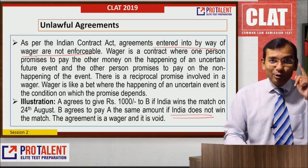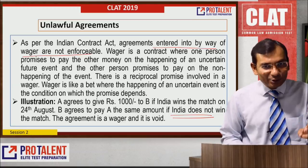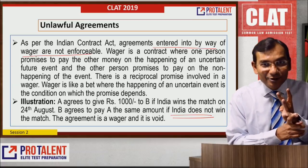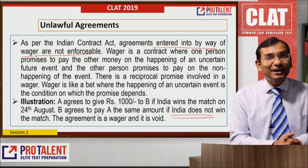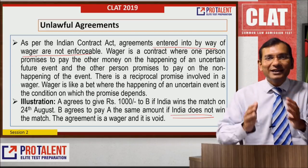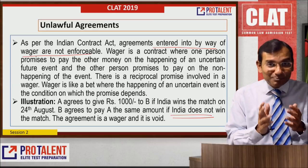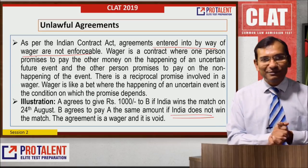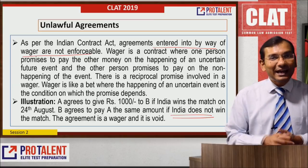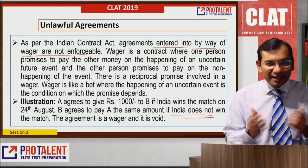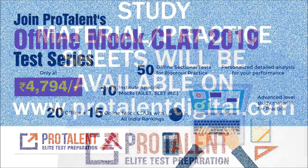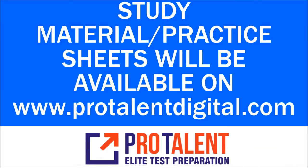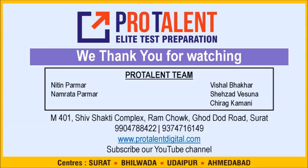So, to summarize: all five ingredients — free consent, competency of parties, lawful consideration, lawful object, and not expressly declared void — must be present to form a valid contract. This second session was specifically about the ingredients of contract. Do not miss our third module where we will discuss contingent contracts and two other interesting types of contracts. Thank you very much and all the best for your preparation.